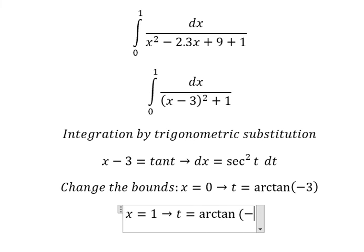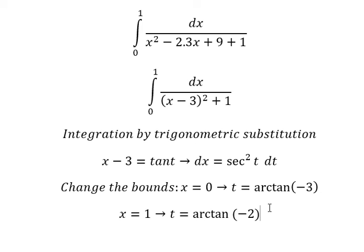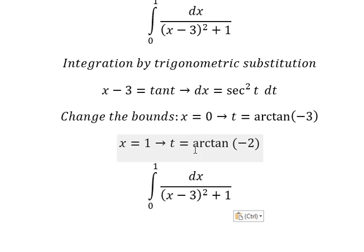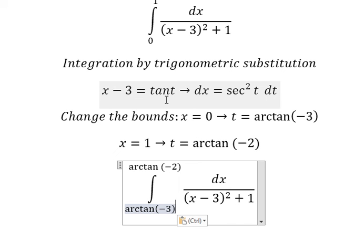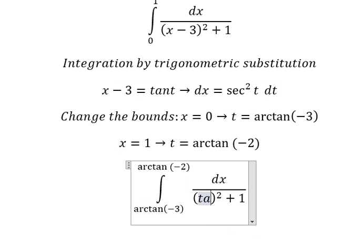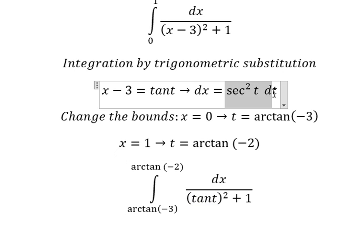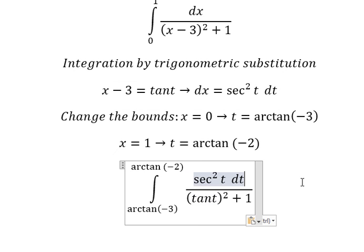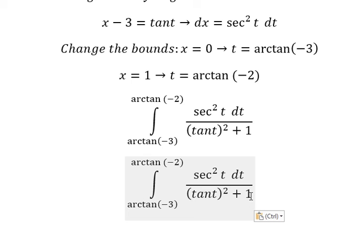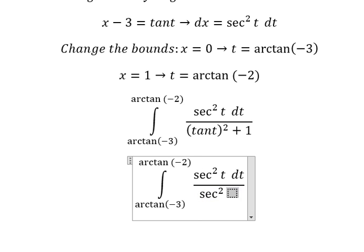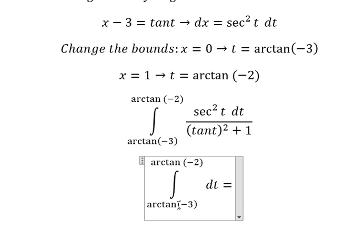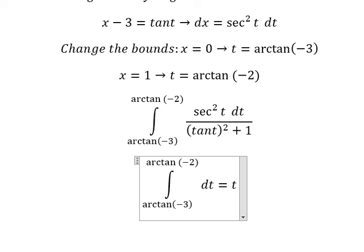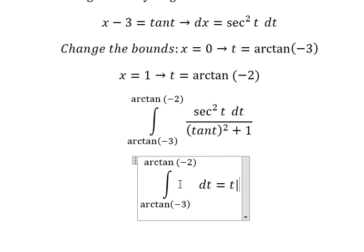So we put this one in here and this one in here. We change tan(t), the dx we change by this one, so we change sec²(t). We simplify and we got dt. Now the integration of dt we got t, and we put the bounds from this one to this one.